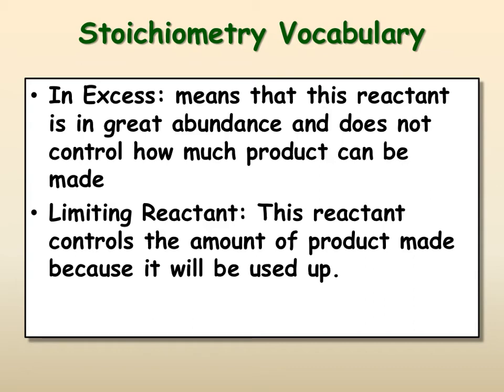When dealing with stoichiometry, we've already kind of dealt with in excess. If the reactant is in excess, then it means it will not affect how much product you can make. However, the converse of that is going to be there will always be one limiting reactant, meaning this reactant controls how much product can be made because this reactant will be used up first.